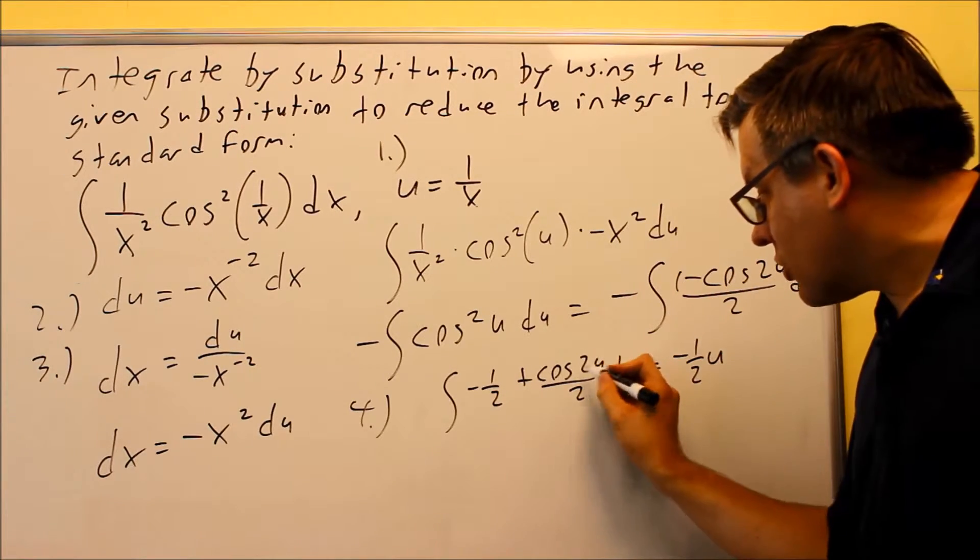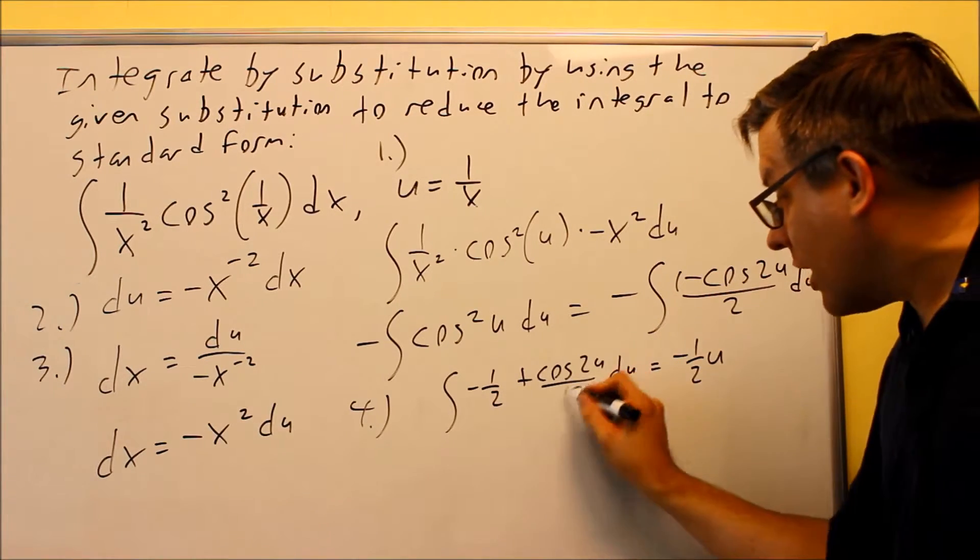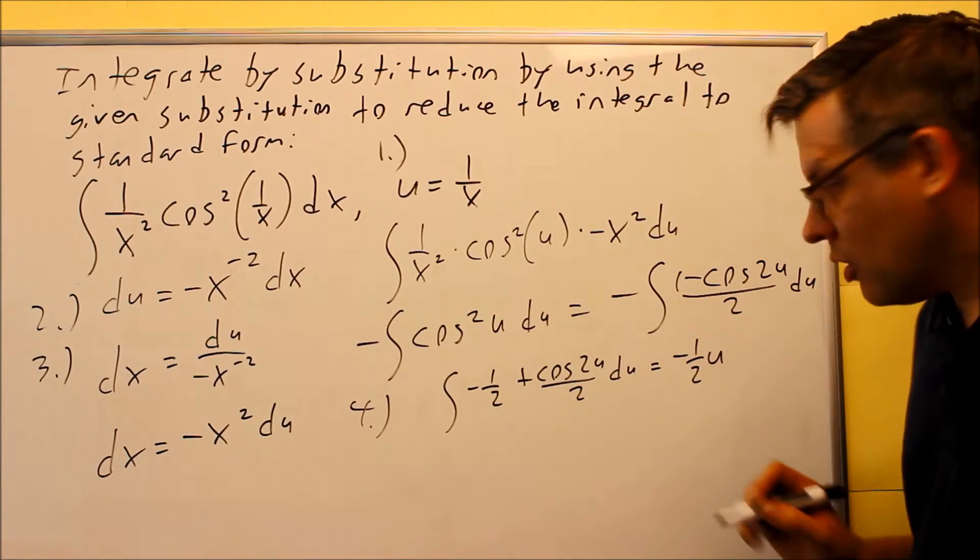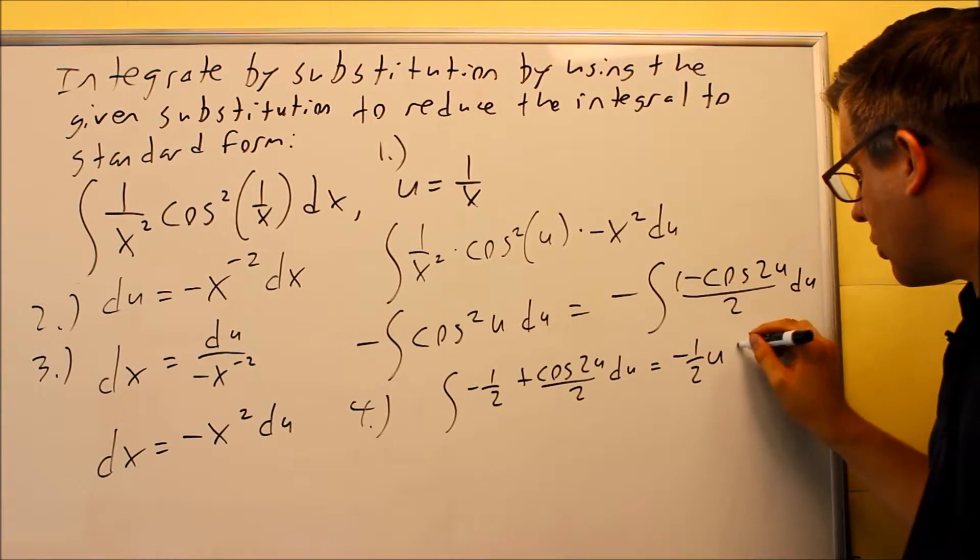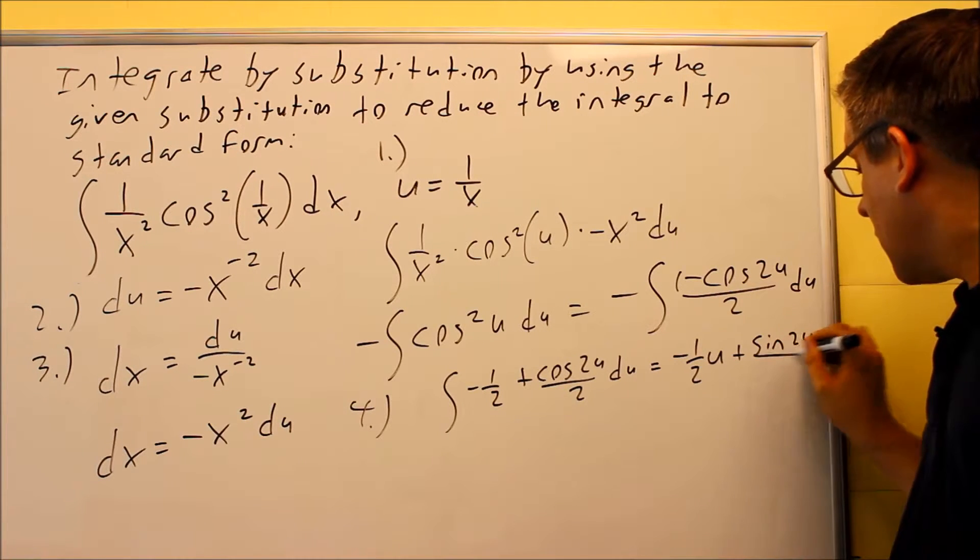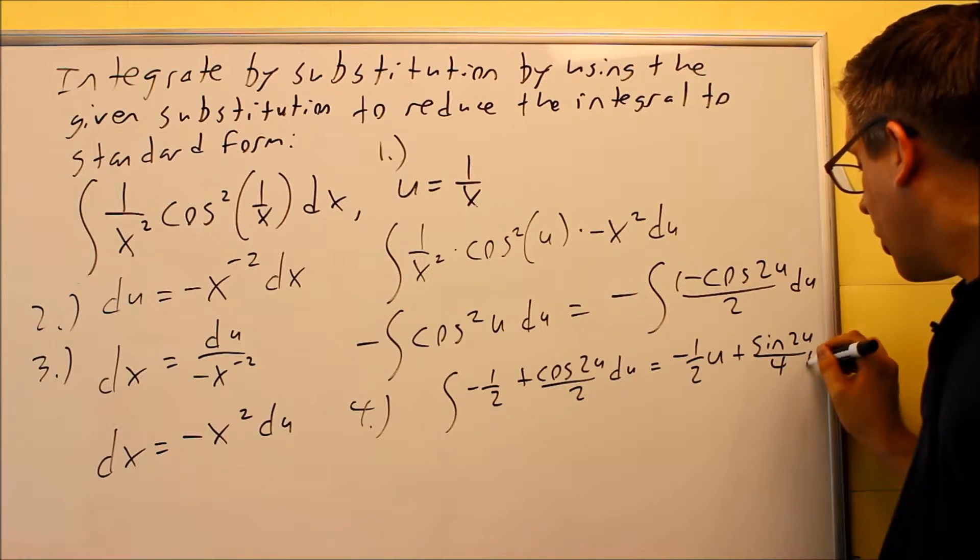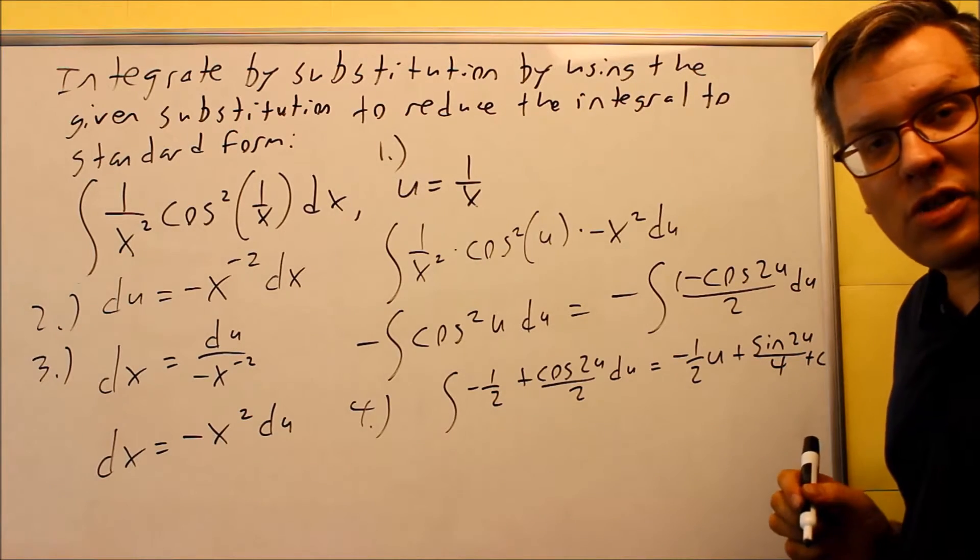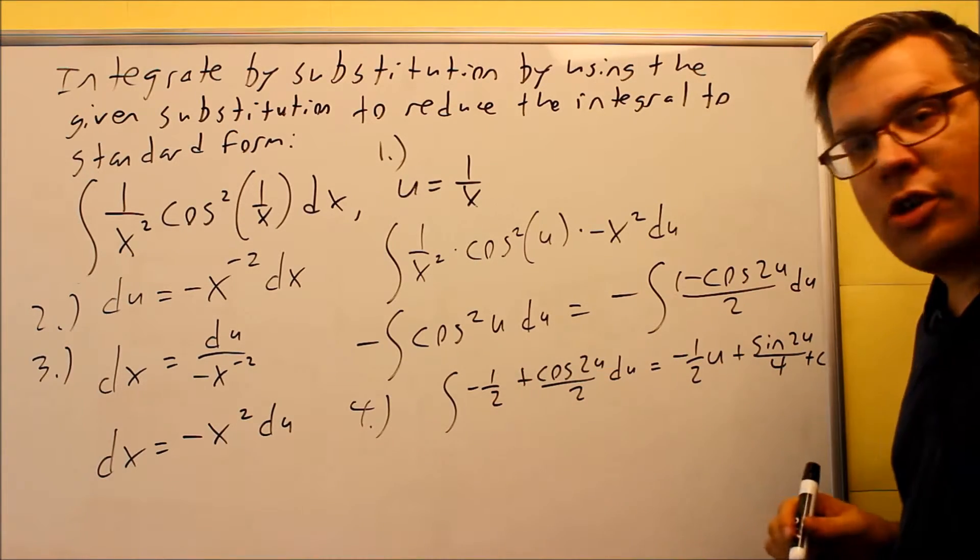because you get a 1 over 2, because that's your k value here, and you already have a 2 down below there, what's going to happen is this is going to turn into a fourth. So you're going to get positive sine of 2u, and that's going to be over 4, and don't forget about the plus c since we don't have any numbers on our original integral.